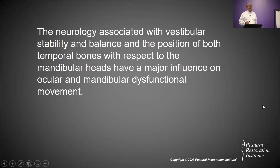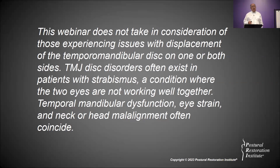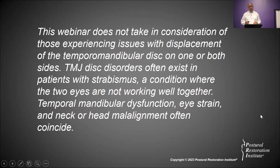The neurology associated with vestibular stability and balance in the position of both temporal bones with respect to the mandibular heads has a major influence on the ocular and mandibular dysfunctional movement you often see in the clinic. This webinar won't cover issues with displacement of the temporal mandibular disc, but temporal mandibular joint disc disorders often exist in patients with strabismus — a condition where the two eyes are not working well together. Temporal mandibular dysfunction, eye strain, and neck or head malalignment often coincide.